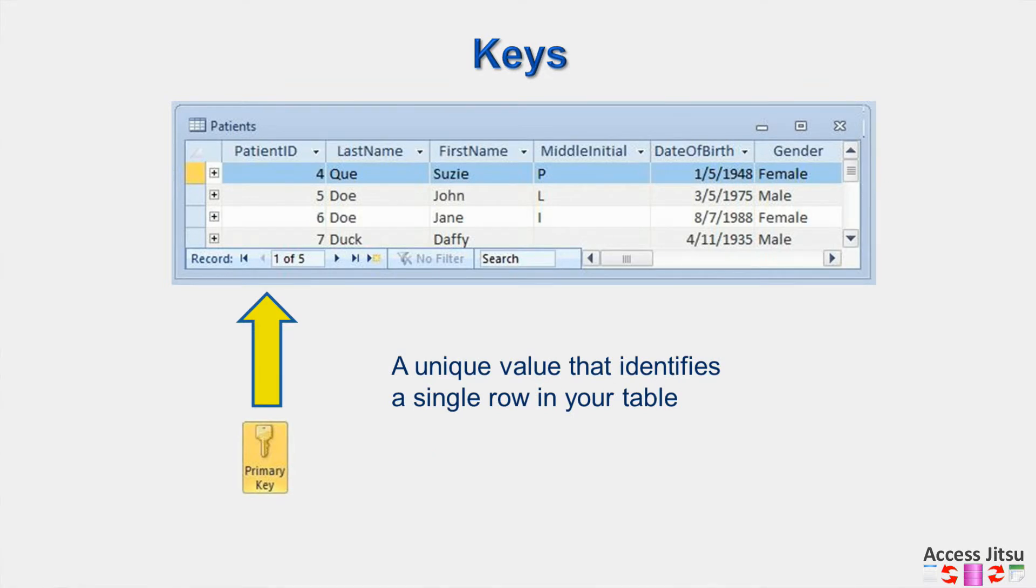The primary key in this patient data table is going to be our patient ID. I've got this set up as a number, and it's going to be auto-incremented by our database so that it's guaranteed to be unique for each row.